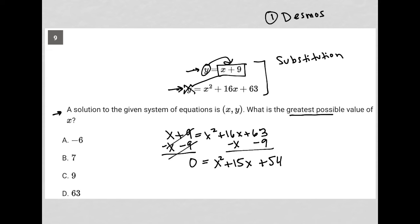So now I have a trinomial, and I want to factor that trinomial. Two factors of 54 that equal 15 when you add them together would be 9 and 6. 9 plus 6 is 15, and 9 times 6 is 54, which means that I can convert this trinomial into the product of two binomials: (x plus 9) times (x plus 6) is equal to 0.